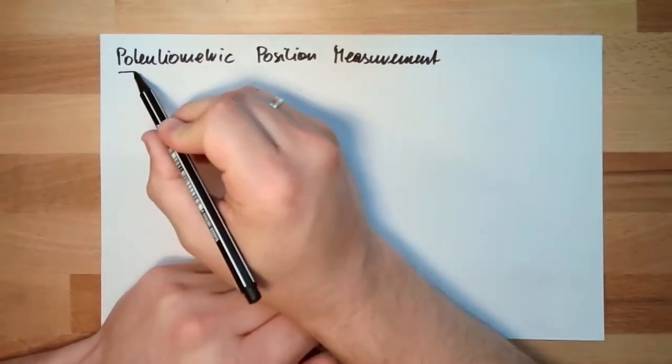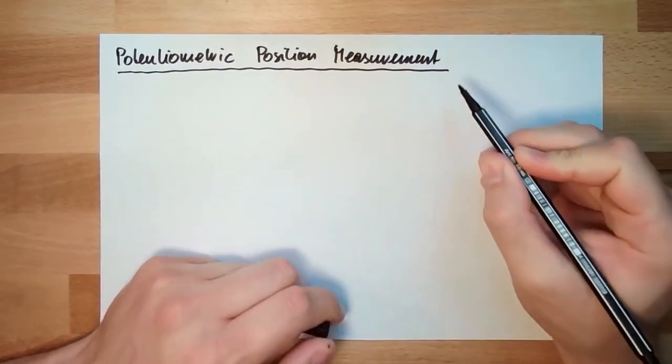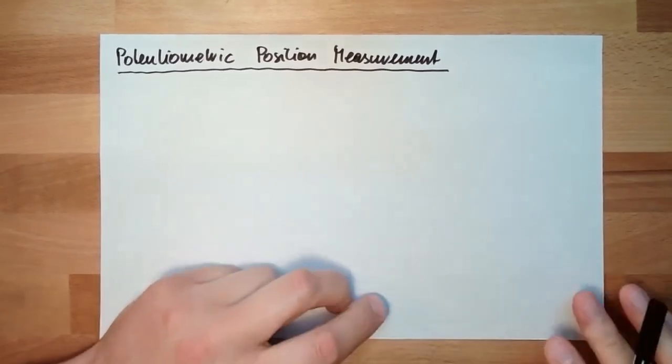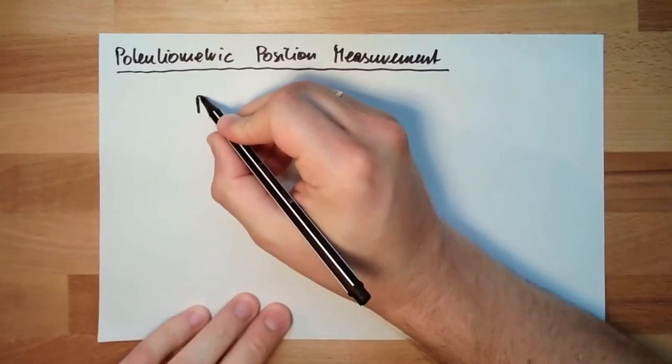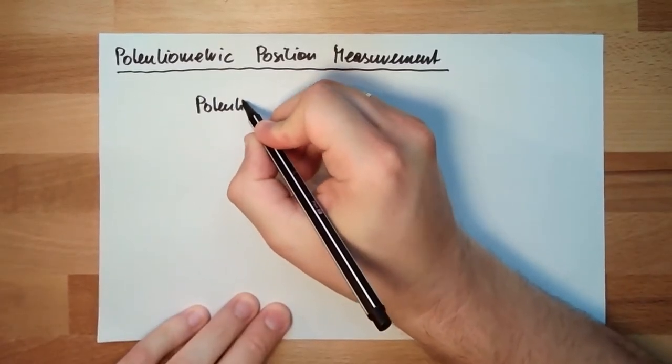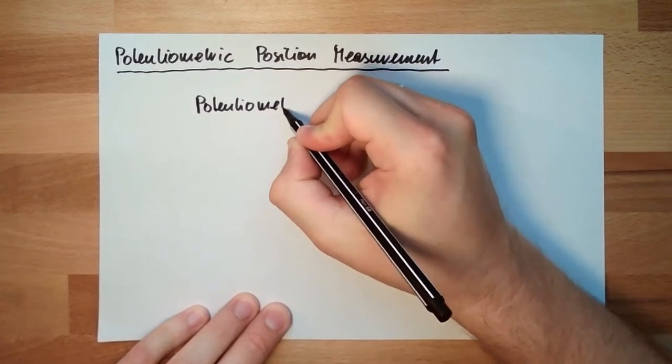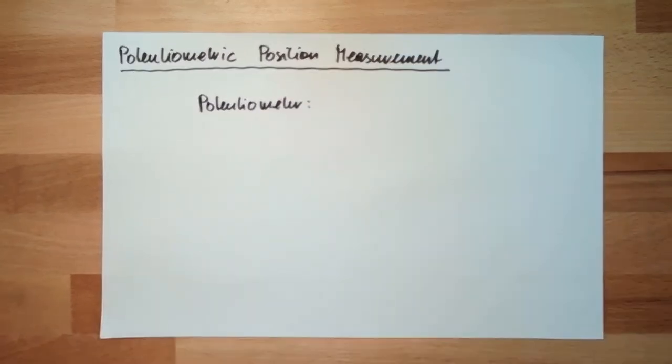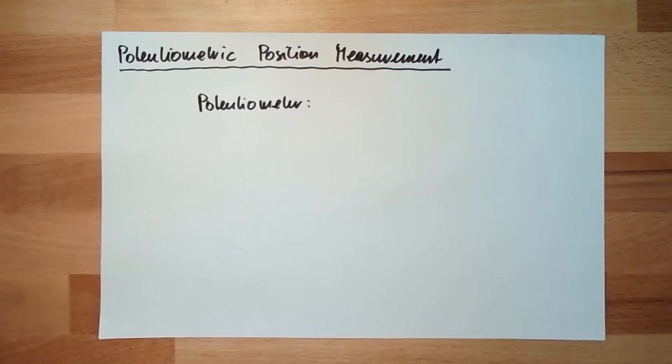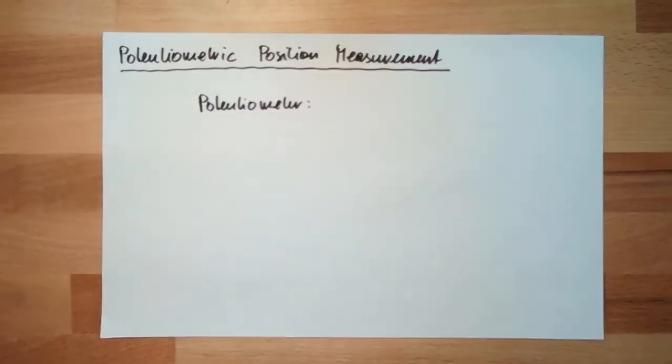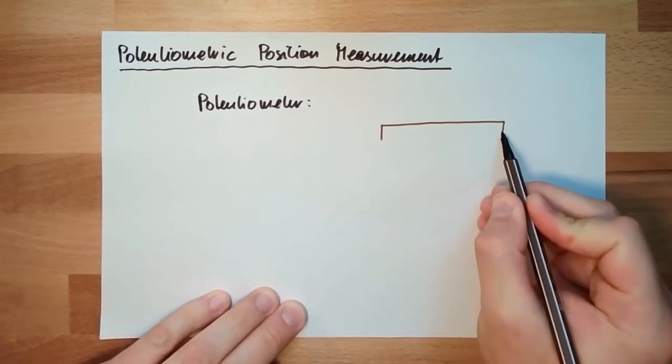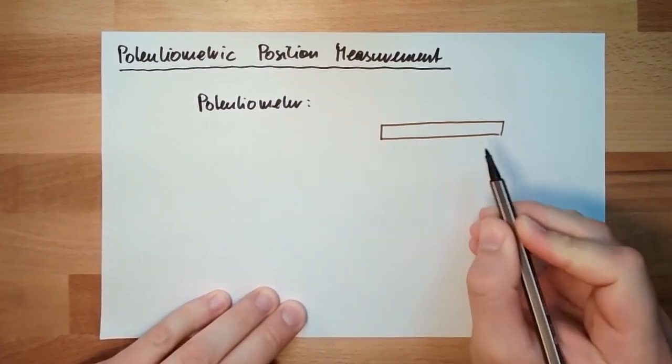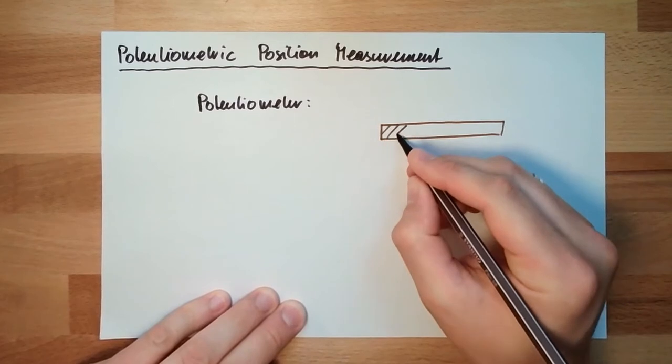Potentiometric position measurement works with a potentiometer. A potentiometer is nothing more, nothing less than a resistor. There is a resistor, usually some stripe of coal or something like this, some semi-conductive, not so good conductive material with some resistance.